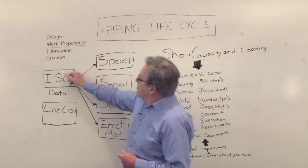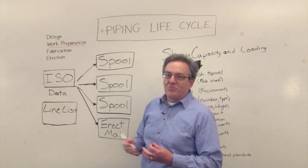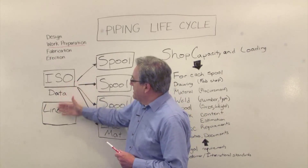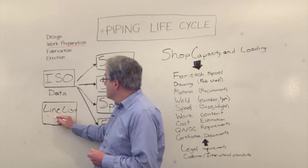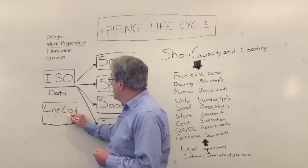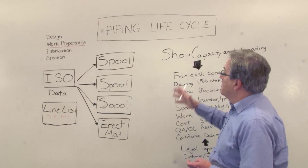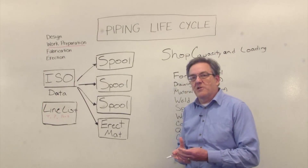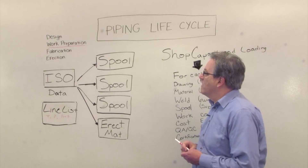We're going to start with the typical issued-for-construction piping isometric drawings and a line list. The line list gives us information on things like temperature, pressure, fluid, and a number of other important things that we need, because the work preparation step is really about planning for the actual physical fabrication of piping.